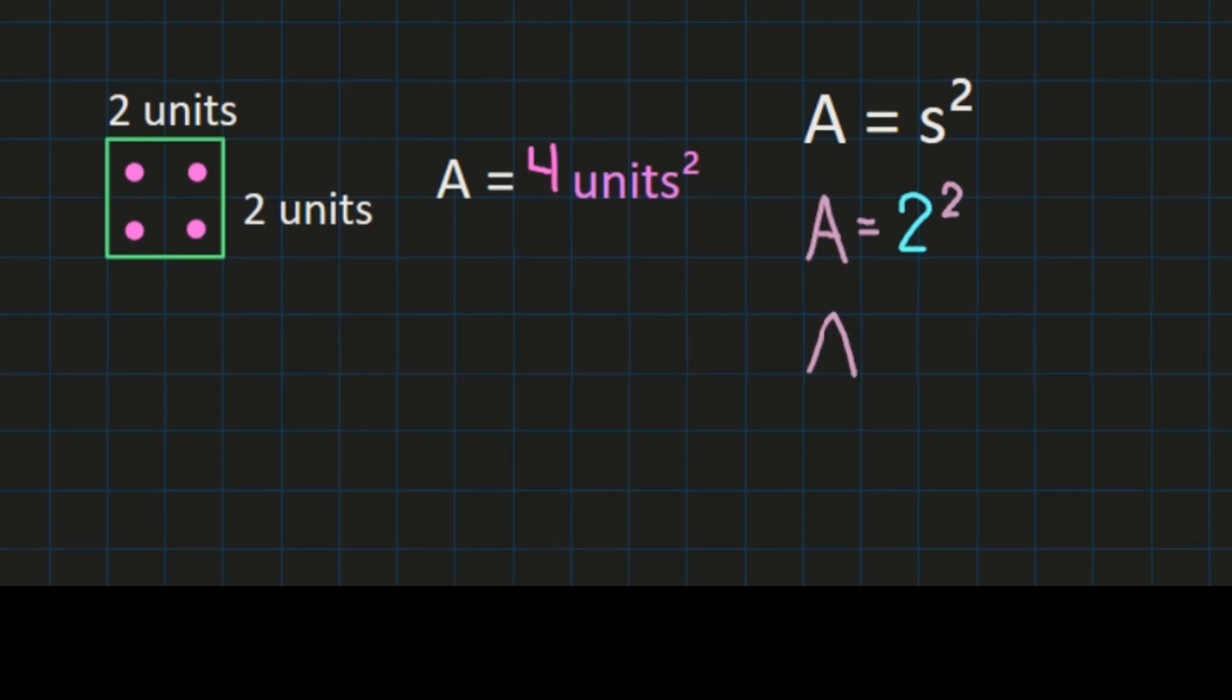And then remember if we're squaring a number, in this instance we're going to have area equals 2 times 2 because we had 2 squared. So the area of our square is 2 times 2. And 2 times 2 is 4. And because we're doing area it's 4 units squared, just like we got when we counted up the square units inside of our square.